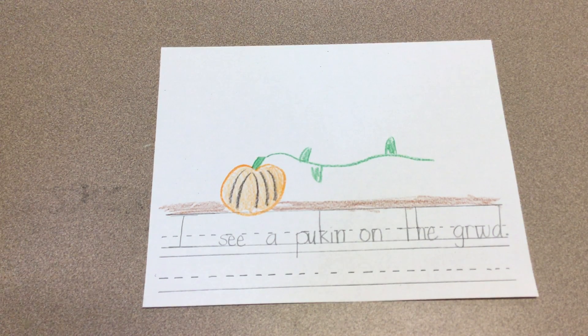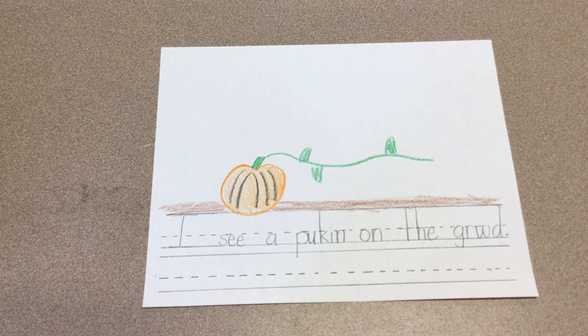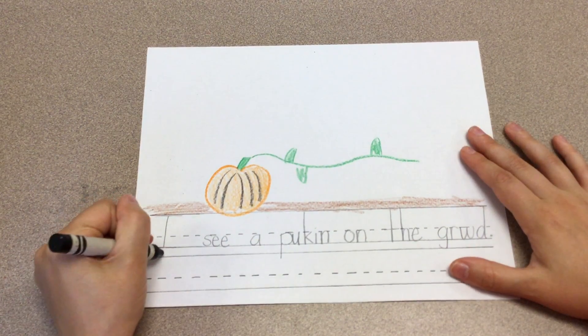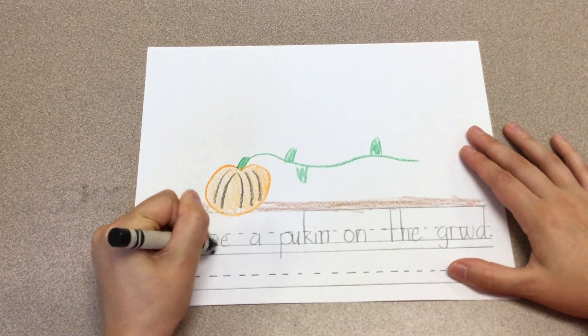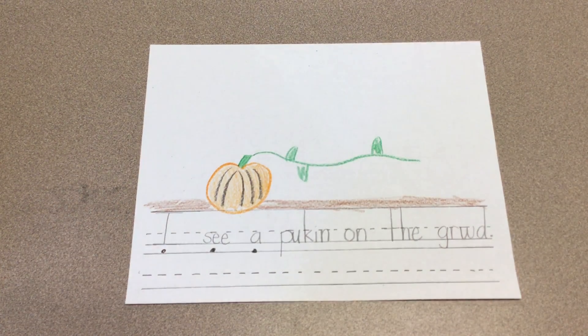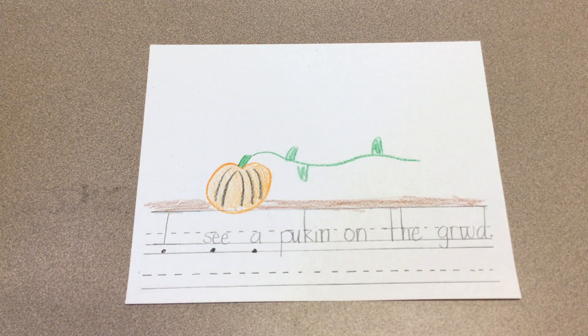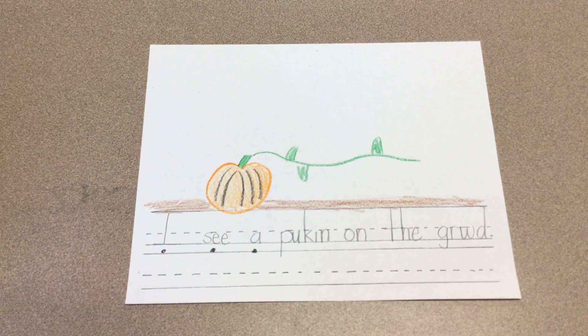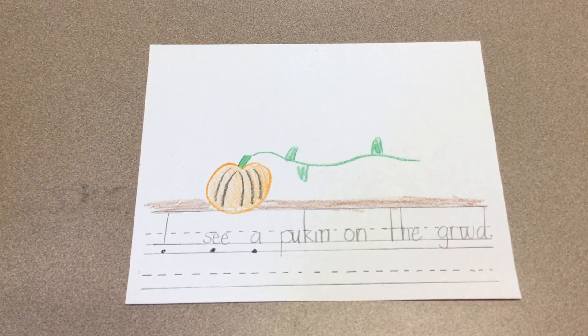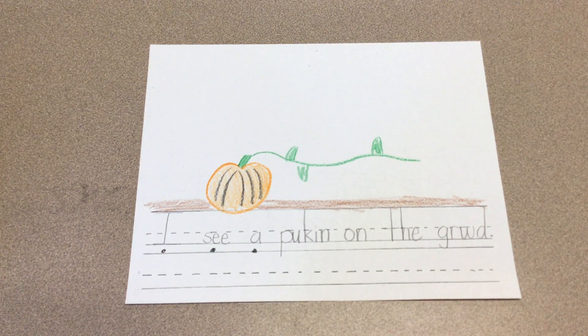I see a pumpkin on the ground. Make your own sight word sentence with I and see and a, right? I see a car, I see a train, I see a table—anything that you can see. It can be something you can see right now, it can be something that you've seen before, but write me a sentence: I see a—and send me a picture when you're done. Good luck.